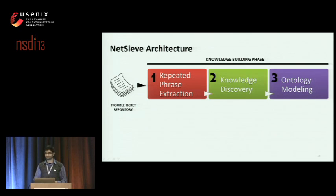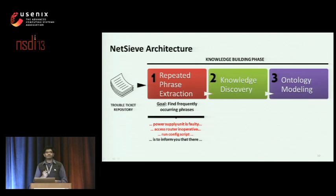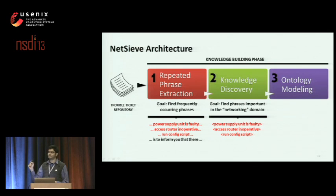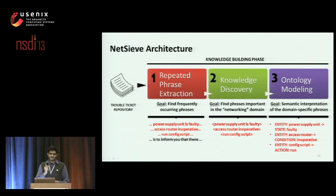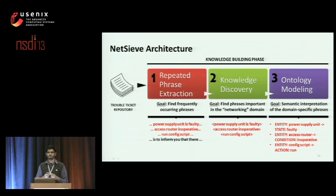To achieve this, we use three steps. First, we find frequently occurring phrases from a given set of tickets. The intuition is to find text that operators frequently use to describe problems across a large number of tickets — for instance, 'power supply unit is faulty' or 'the access router is inoperative.' In step two, we determine which of these phrases are important in the current networking domain, so everything technical gets marked as important. In step three, we attach a semantic to each domain-specific phrase. NetSieve, using an ontology model, attaches 'entity' to 'power supply unit' and 'state' to 'faulty.' To summarize: we find frequently occurring phrases, extract the important ones, and attach a semantic to each.